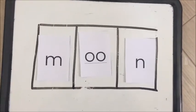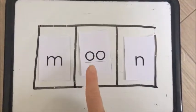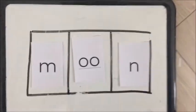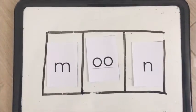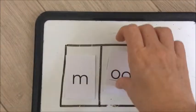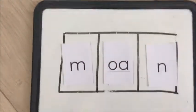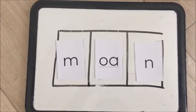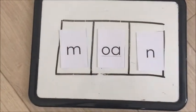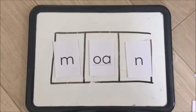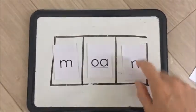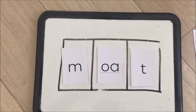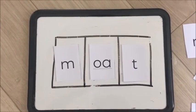Now we're going to change it again to moan — M-O-N. So we're looking for O-O, goat in a boat. M-O-N. This is the one we need to change. Now that it says moan, I want to change it again to moat. To make it say moat I need to change this sound like this — M-O-T.